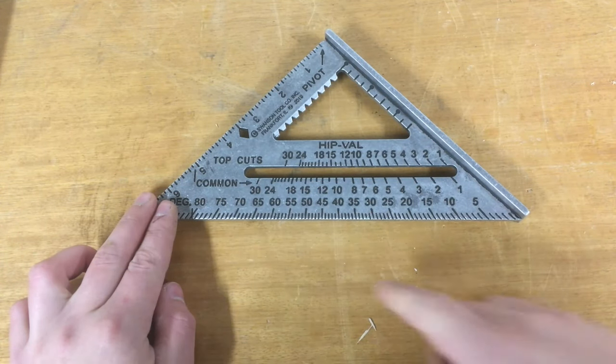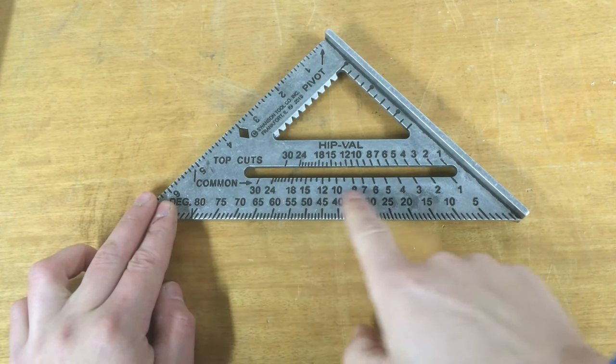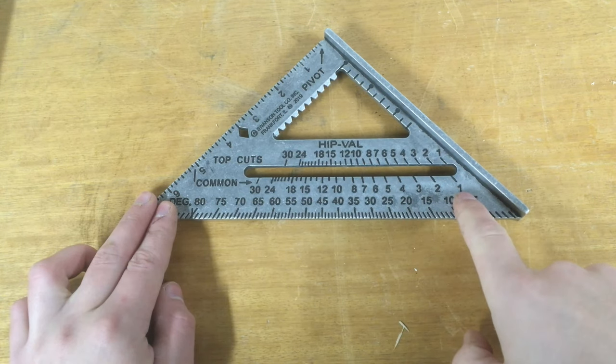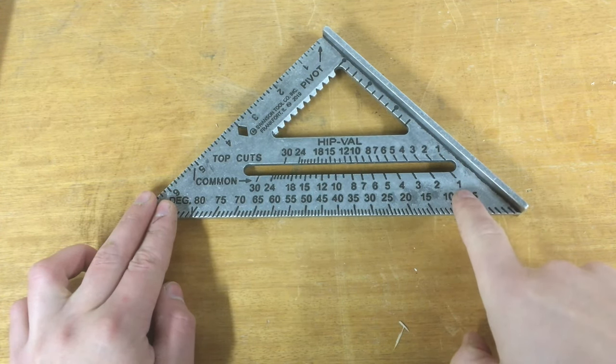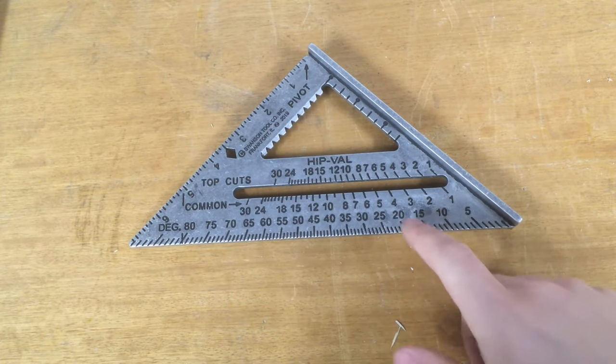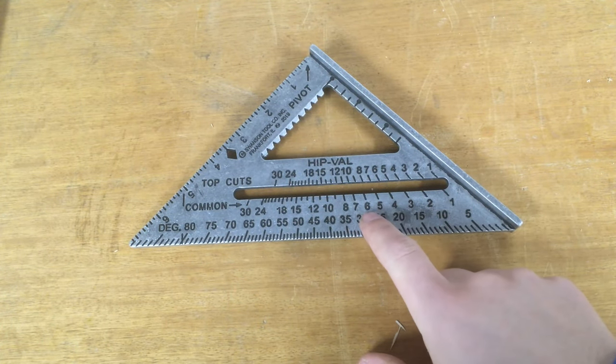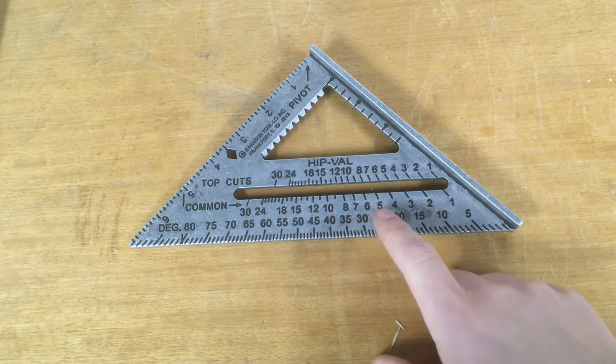When you're marking angles for rafters, you use the numbers marked common on this slot. These numbers are the inches in 12 that refer to the slope or pitch of your roof. Very commonly, it's either 4 in 12 or 6 inches in 12, and I'll show you 4 in 12.